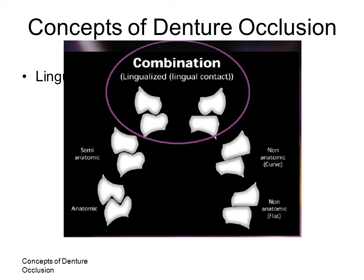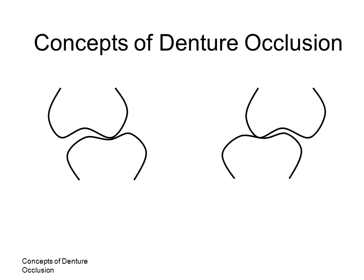Lingualized articulation may have a maxillary tooth with an anatomic form opposing a mandibular tooth of either non-anatomic or semi-anatomic form. Lingualized occlusion incorporates positive aspects of both bilateral balanced articulation and non-anatomic articulation. The use of a semi-anatomic tooth on the lower implies a more balanced scheme, whereas the use of a non-anatomic lower implies a non-anatomic type of scheme. Lingualized occlusion may use the lingual cusp of the maxillary tooth to provide both centric and balancing contacts. The anterior teeth do not touch in centric and are in brushing contact in eccentric movements. This may be established with or without the use of a compensating curve.